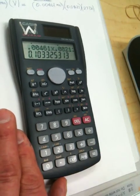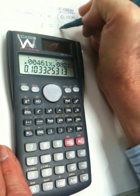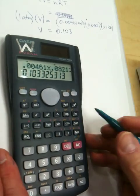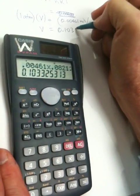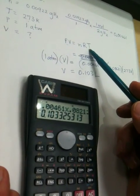And that's 273, and our number that we get at the end, V is going to be equal to 0.103, and that's going to be in liters because that is the only unit that we can use in PV=nRT.